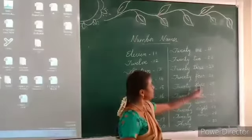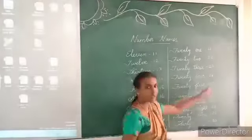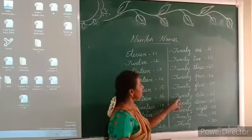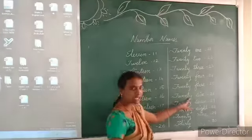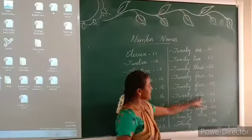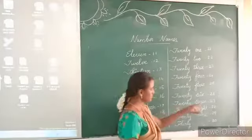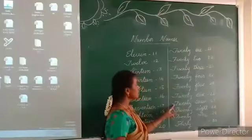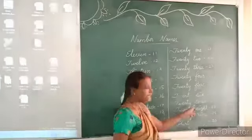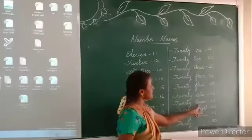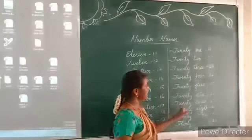Twenty-five — F-I-V-E — 25. Twenty-six — S-I-X — 26. Twenty-seven — S-E-V-E-N — 27.